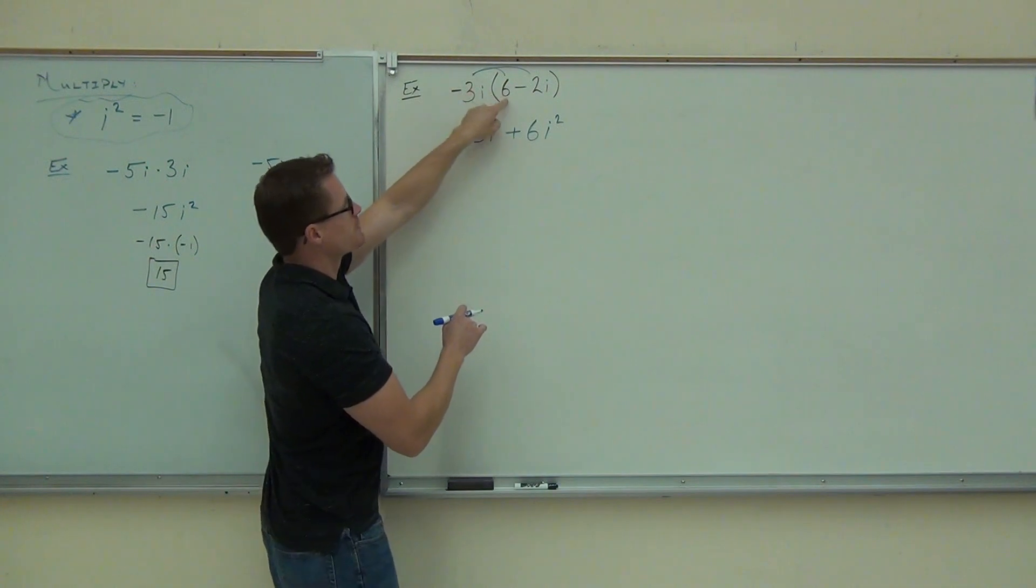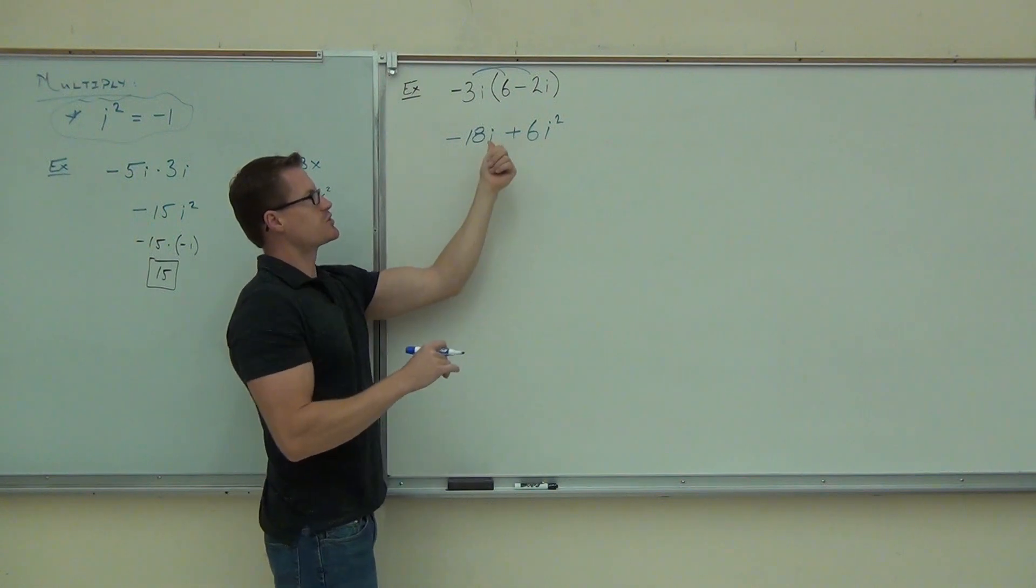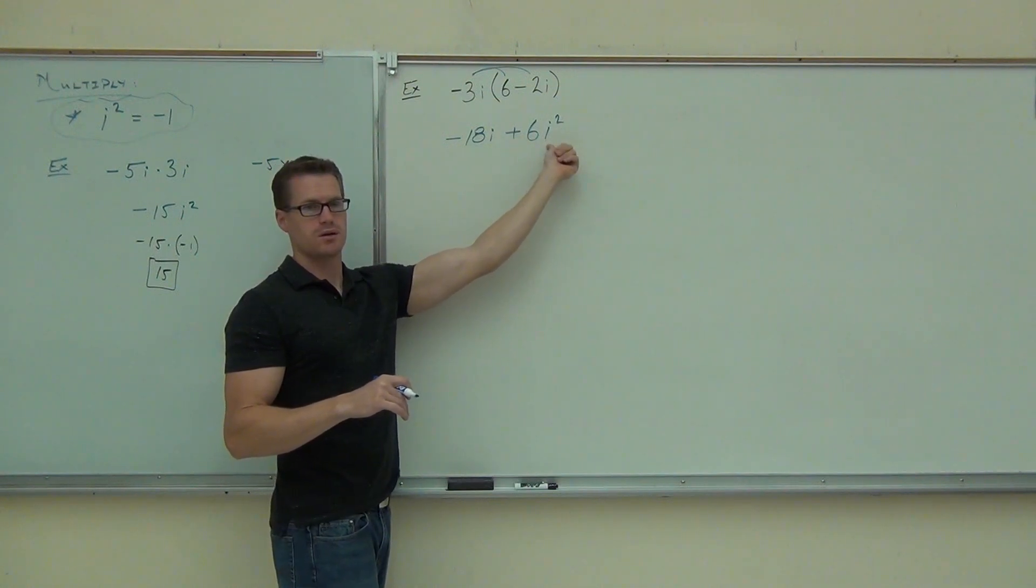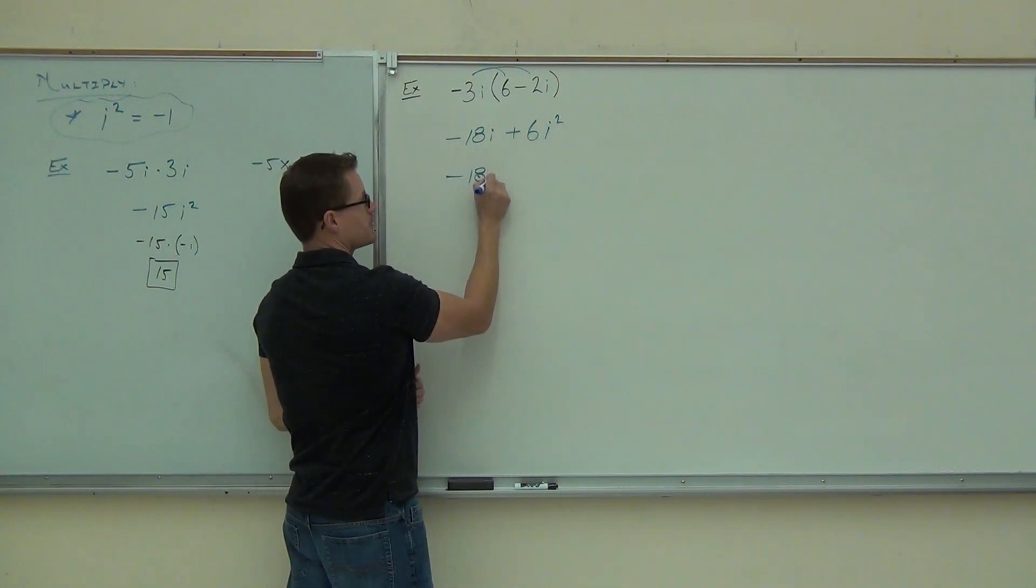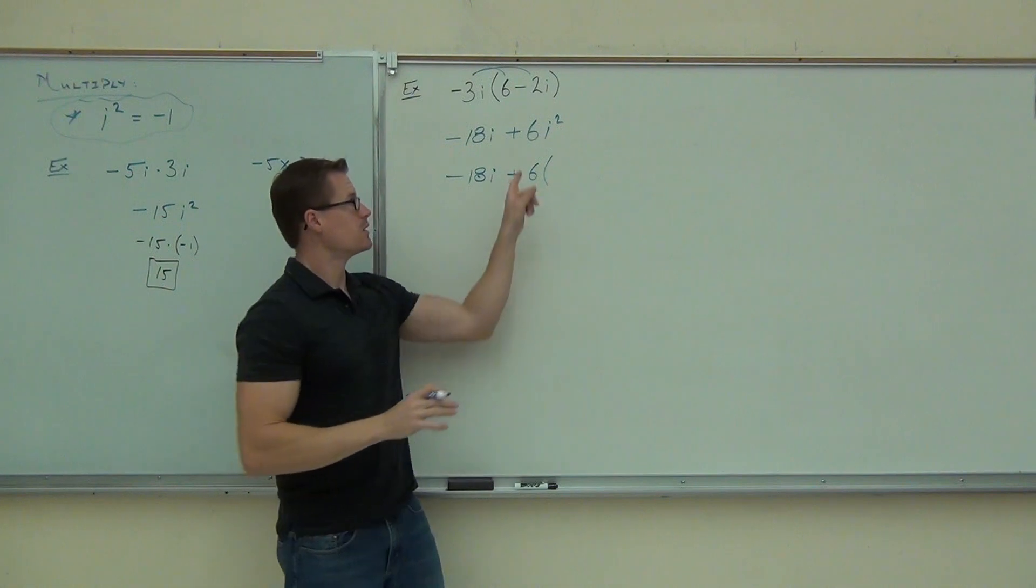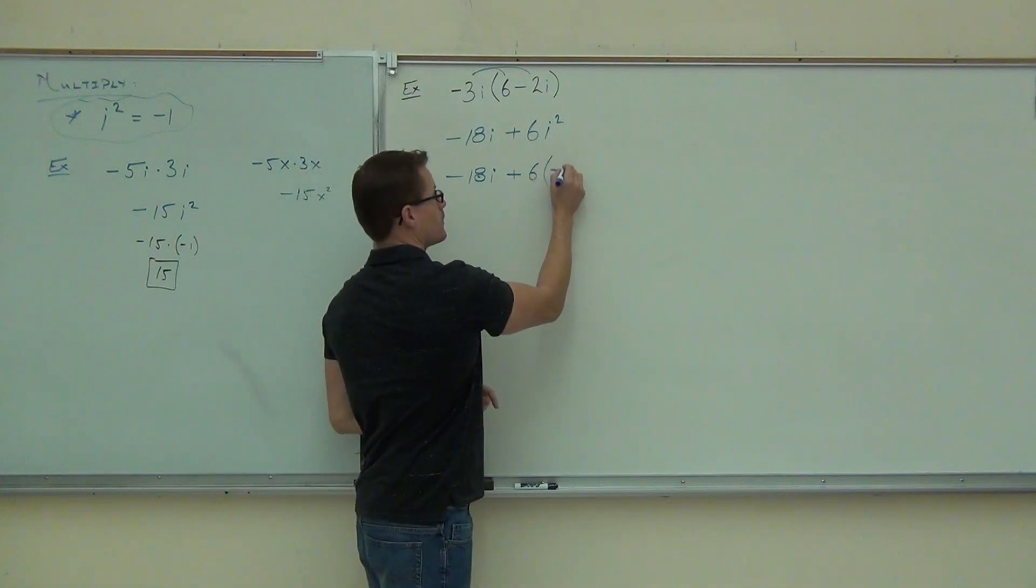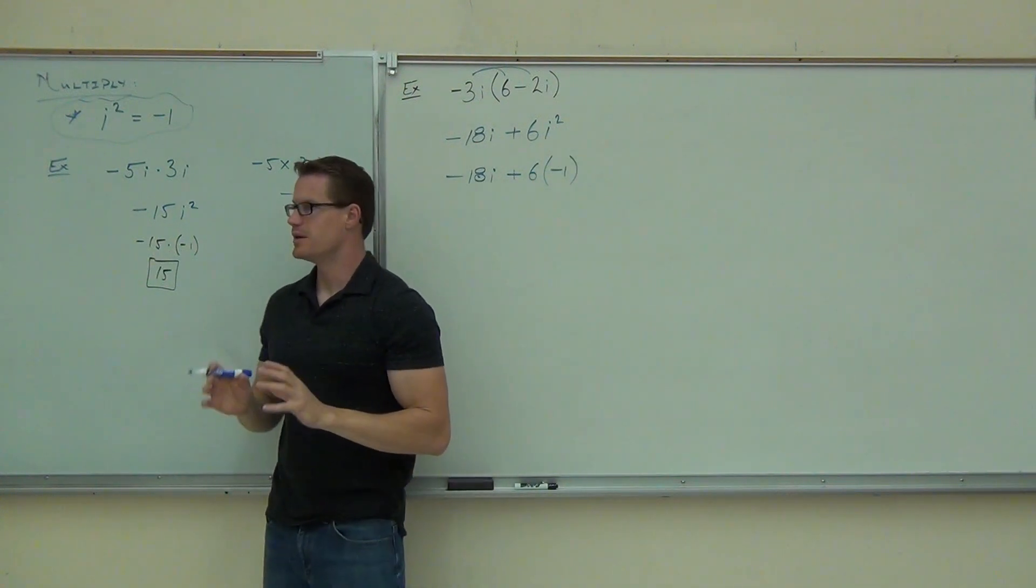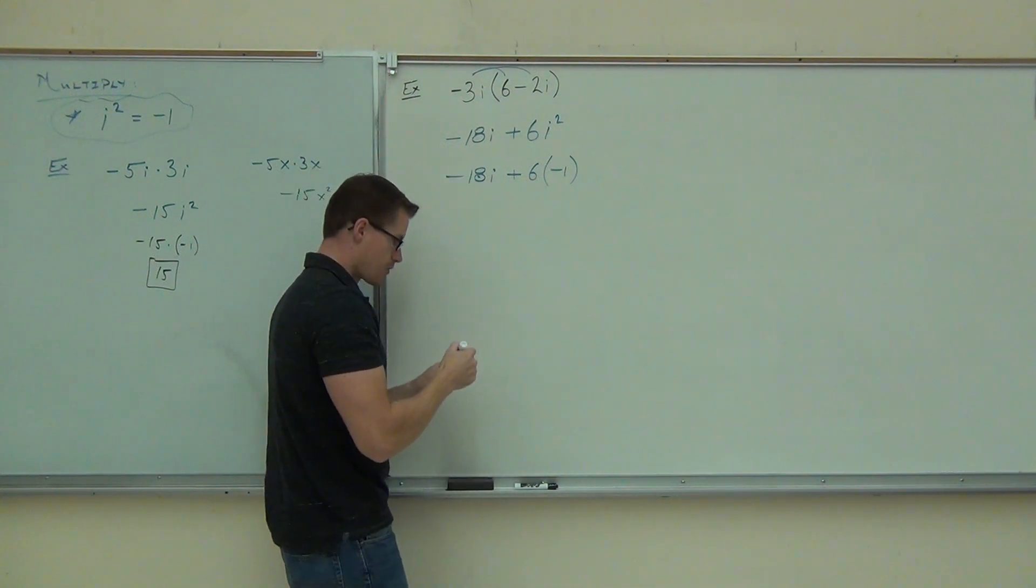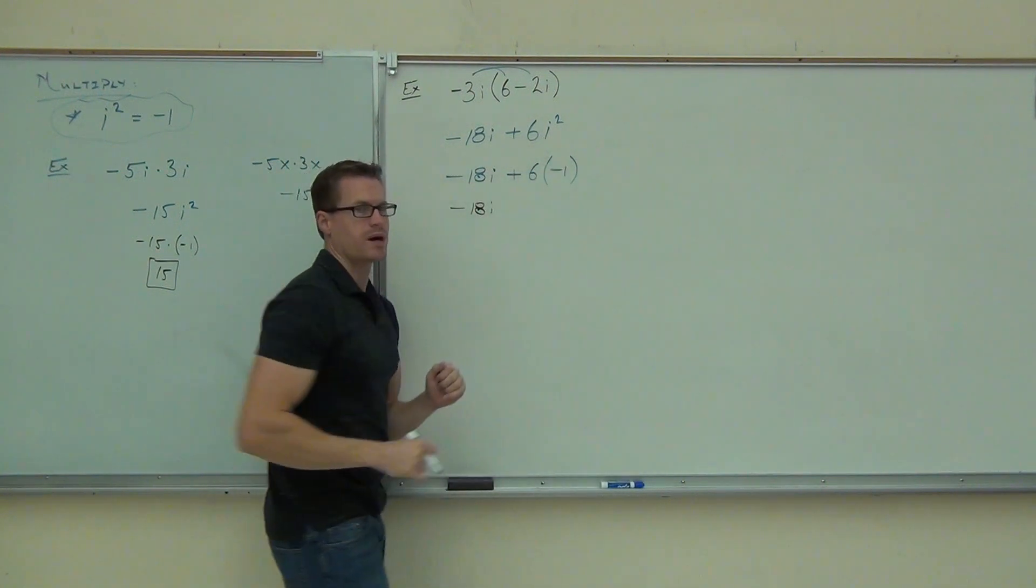So we distribute, we get negative 18i, we get positive, negative, negative, positive 6i squared. Can I change this i? No, that's the square root of negative 1. I can't change that. Can I change this i squared? Yes. So do that. I know I have negative 18i plus 6. And write this out. Write it out before you change anything about it. Leave the plus. Leave the 6. Just change that part. How much is this part right there? Good.